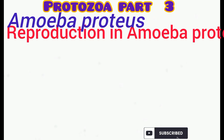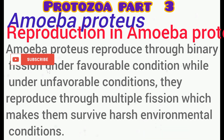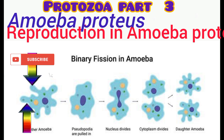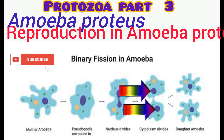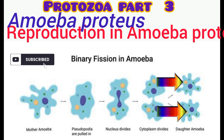How does Amoeba proteus carry out reproduction? They reproduce through binary fission under favourable conditions. In binary fission, the pseudopodia of the parent organism eventually retract, followed by elongation and division of the nucleus, and eventually the cytoplasm divides to form two daughter amoeba.